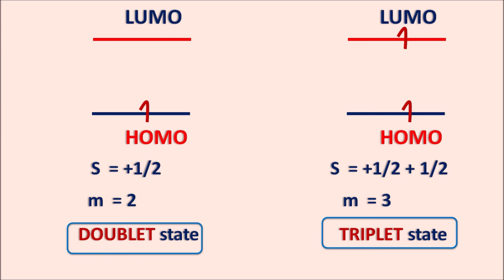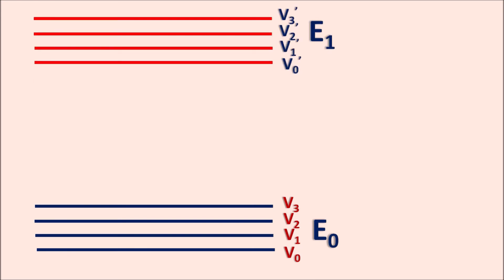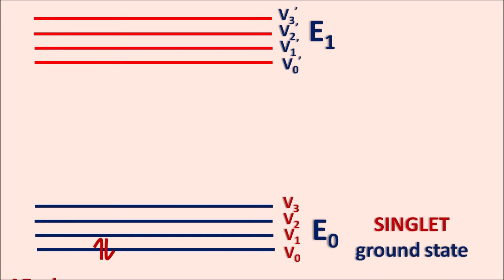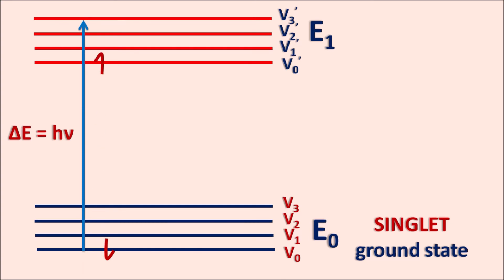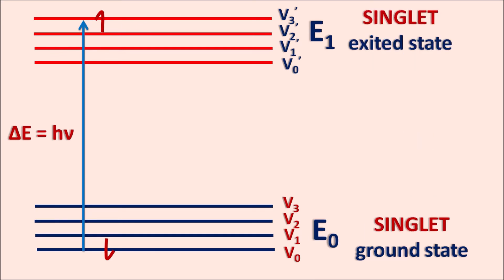Using multiplicity, we can define electronic states within molecules. Under resting conditions, paired electrons in the HOMO give S = 0, M = 1 — singlet ground state. When energy ΔE = hν is supplied, an electron jumps to the excited state. If the excited electron still has opposite spin to the ground-state electron, the net spin is zero, M = 1, and it is in the singlet excited state.